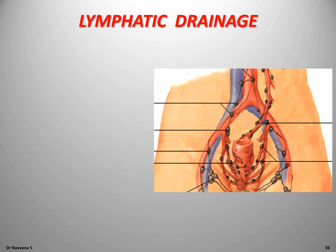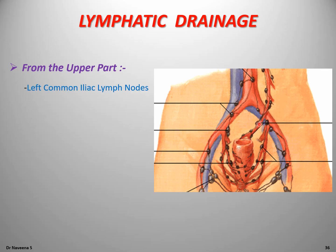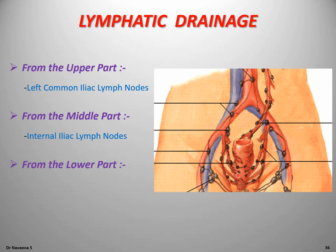Lymphatic drainage of the rectum: lymph channels form submucous and intramuscular lymphatic plexuses, draining into groups of lymph nodes that accompany the arteries. Lymphatics from the upper part accompany the superior rectal artery and drain into the left common iliac lymph nodes. Lymphatics from the middle part accompany the middle rectal arteries and drain into internal iliac lymph nodes. Lymphatics from the lower part pass both above and below the levator ani muscle, then through the pudendal canal to drain into internal iliac lymph nodes.